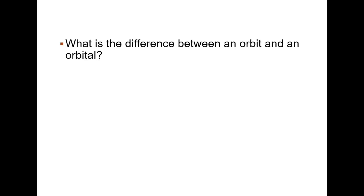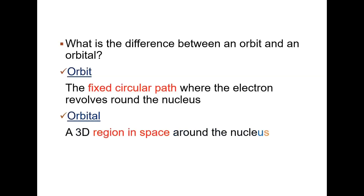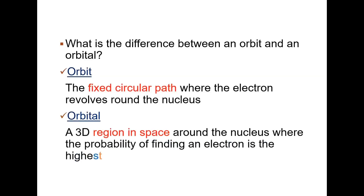What is the difference between an orbit and an orbital? This is very important. An orbit is the fixed circular path where the electron revolves around the nucleus. However, an orbital is a 3D region in space around the nucleus where the probability of finding an electron is the highest.